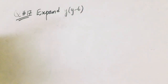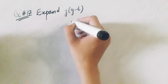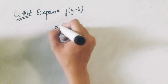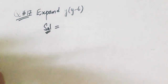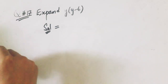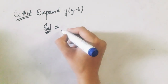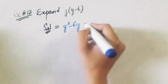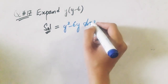Now question number 17: expand Y into Y minus 6. This will be equal to Y multiply Y minus Y multiply 6, that is Y squared minus 6Y. So this will be the answer.